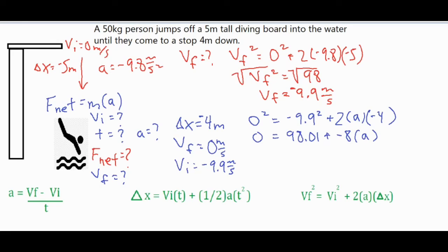And then basically what we're going to do is subtract 98.01 from both sides, which cancels it here and sends it to the other side. And that equals negative 8A on this side. Still finish it off by solving for A by dividing both sides by negative 8. And then we have a final acceleration of 12.25 meters per second squared.